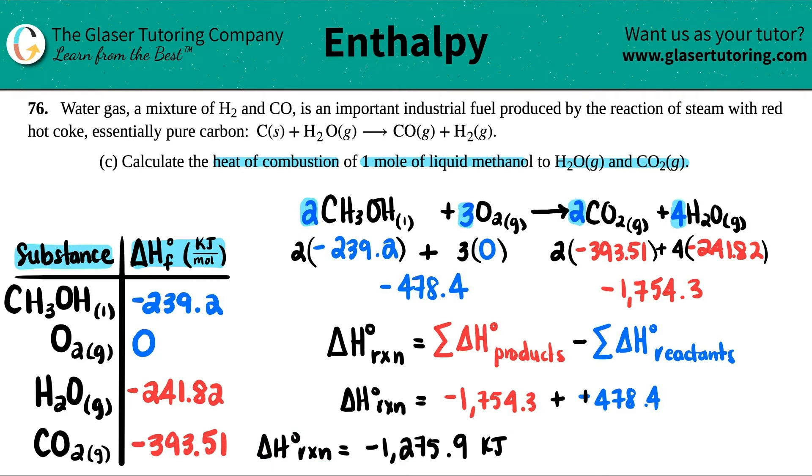Now I'm ready to calculate the delta H. The whole delta H is products minus reactants: -1754.3 minus -478.4. When you're minusing by a negative, remember it's keep-change-change, so it's really adding a positive. I get -1275.9 kilojoules.